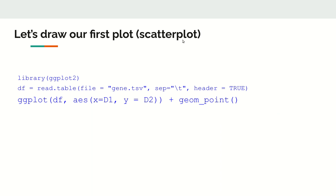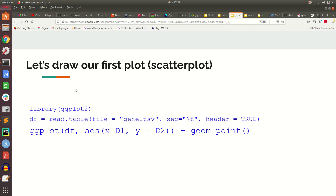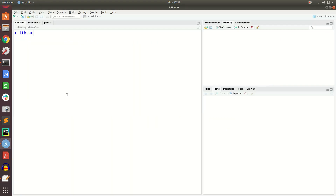Now let's draw our first plot. We need to first load the library and import the file. It is a TSV (tab-separated) file, so we use the basic R command read.table(), specifying the file name, sep='\t' for tab-separated, and header=TRUE since the first row is the header. With this simple command we can import the data frame. The library ggplot2 is now loaded.